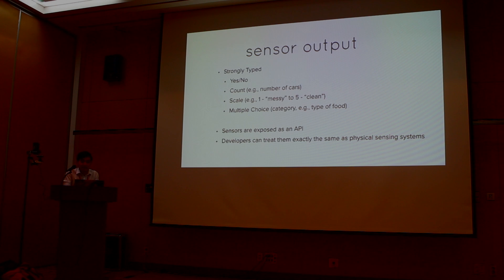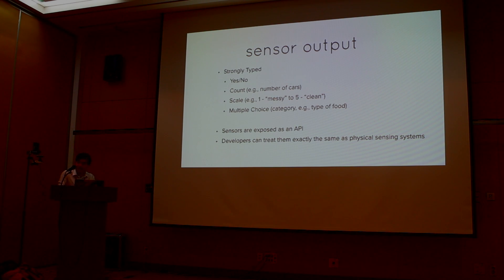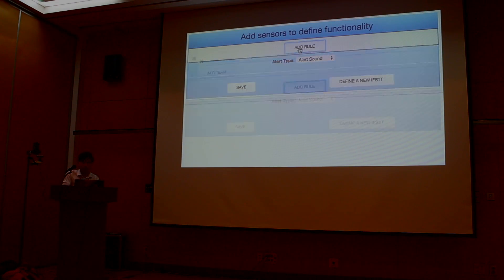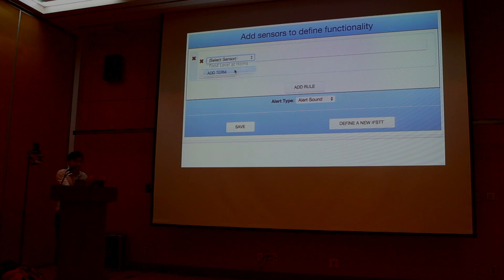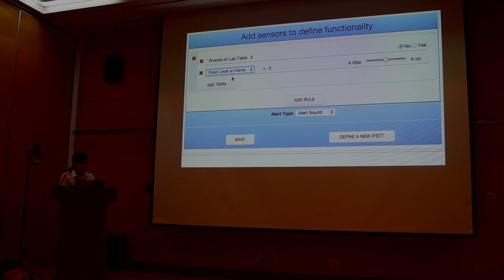What comes out of the system are strongly typed sensors. For example, a yes/no sensor produces binary output, while a counting sensor produces continuous numerical values. This simplifies our machine learning pipeline but also allows developers to build end-user applications, which we expose as an API. For example, we built our own end-user programming interface using our API, which lets us create triggers — like: when free food in the kitchen equals true, then email grad students.